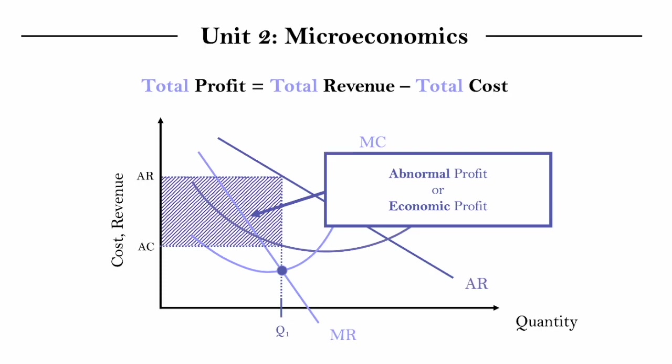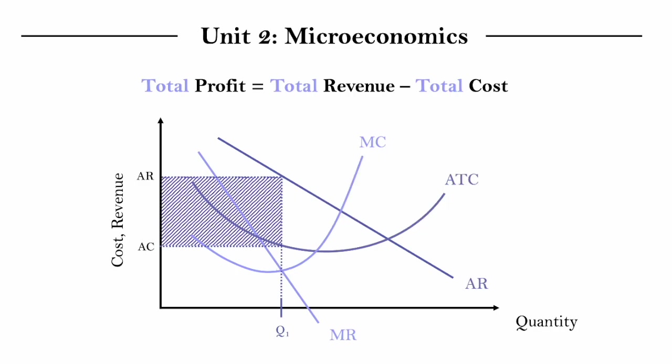And I'm just going to first mention that that is what they're called, and I'm going to explain why later. But just keeping in mind that this shaded area is abnormal or economic profit, abnormal profit being the term preferred in the syllabus.